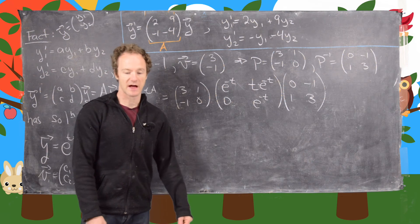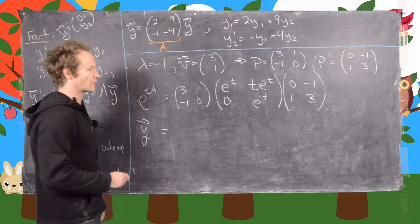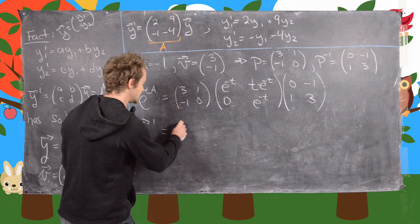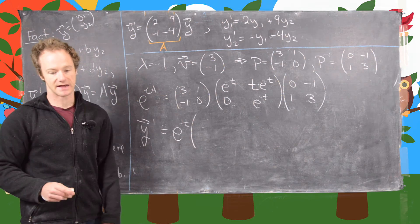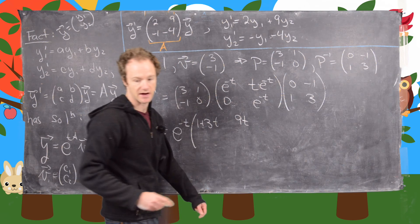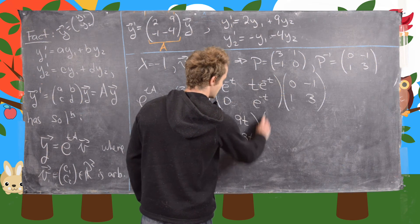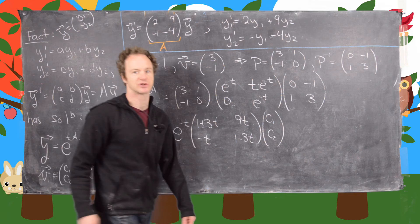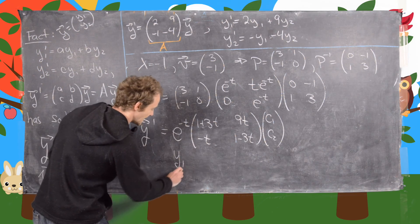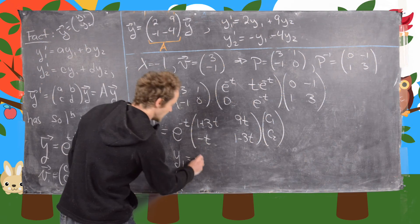So now if you were to multiply that out, you would get this solution for y prime. And so I'll write the solution for y prime and multiply all that out at the same time. And so what we'll get, I'll factor an e to the minus t out of the whole thing, because I can. And then I'll have 1 plus 3t, a 9t here, and then minus t, and then 1 minus 3t here. And then I have c1 and c2, and those are arbitrary constants, which would depend on the initial conditions.